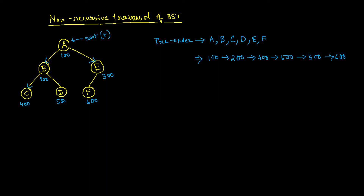A node contains a data part, the address of its left child, and the address of its right child — but not the address of its parent. So while 100 to 200 is possible, and 200 to 400 is possible, going from 400 to 500 directly is not — there's no direct connection. Similarly, 500 to 300 is not possible directly, though 300 to 600 is possible.